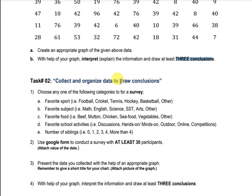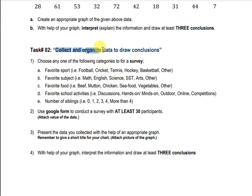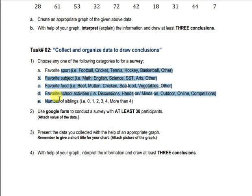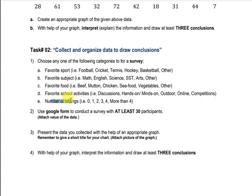In the second task, you are supposed to collect and organize data to draw conclusions. The first instruction is to choose any one of the following categories for a survey: favorite sports, favorite subject, favorite food, favorite school activities, or number of siblings at home. Choose any one of these topics.